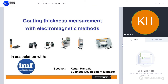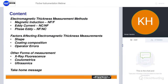Today I have been kindly invited by John to talk about coating thickness measurements with electromagnetic methods. On the agenda we have the currently used methods for measuring coating thicknesses, the factors affecting electromagnetic thickness measurements — such as the shape of an object or the coating composition — possible operator errors, and external influences. I will also briefly touch on other forms of measurement in our range: x-ray fluorescence, coulometrics, and ultrasonics. The take-home message is how we can eliminate most of the errors seen when taking measurements.